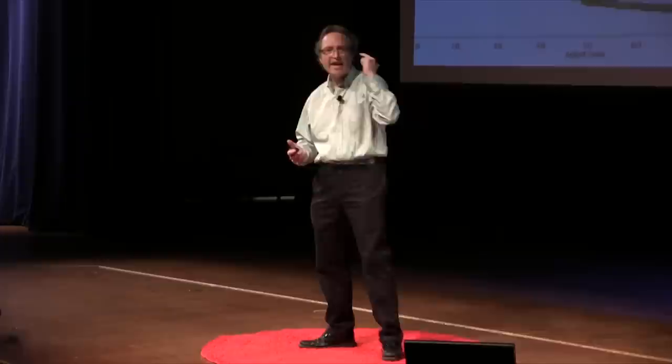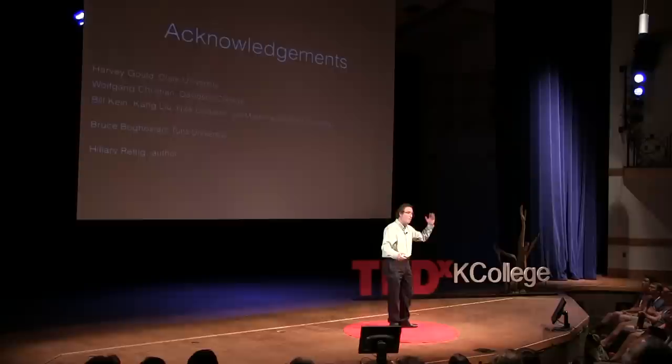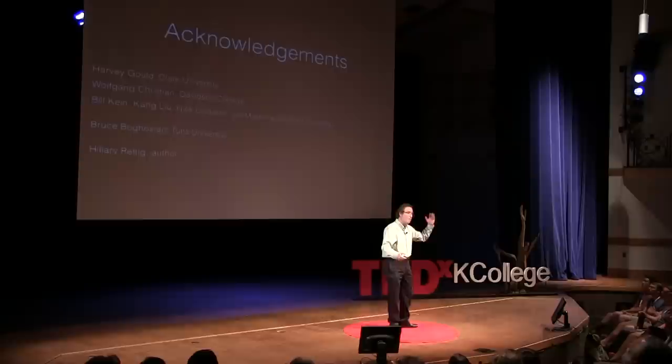So what are the lessons today? Wealth inequality is inevitable — it's going to happen. Second, the only way to stop it, to make it better, is through taxes. And the most important issue is not how you tax, but how you distribute the tax revenue that you get. So change your conversations in the future: stop arguing about those tax rates, and start arguing about what to do with the taxes. Thank you so much for your attention.